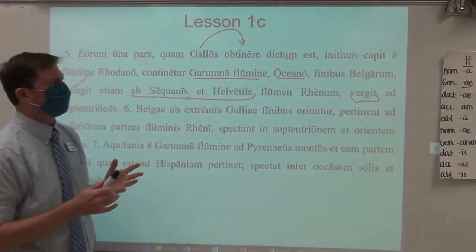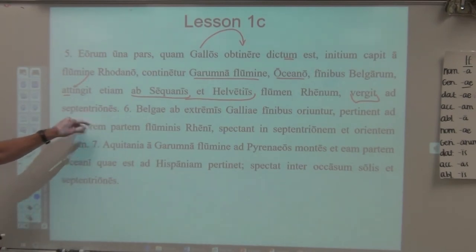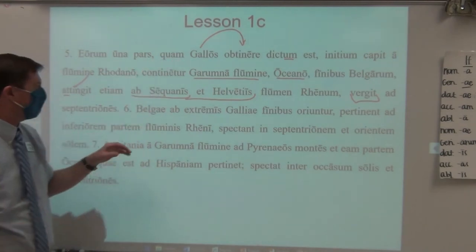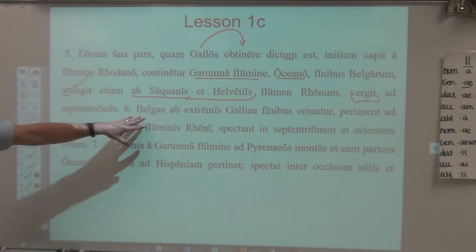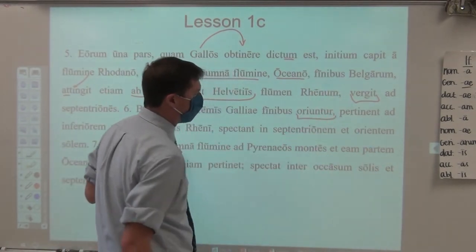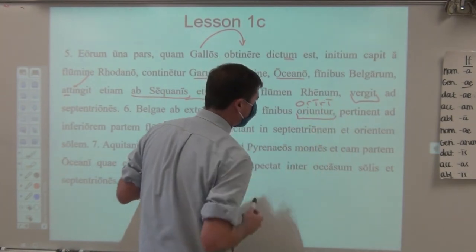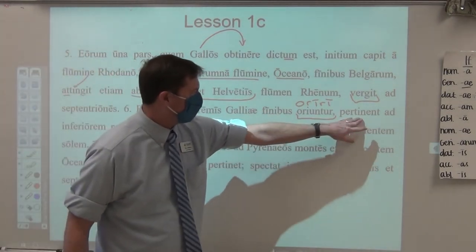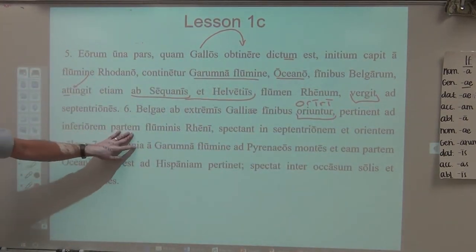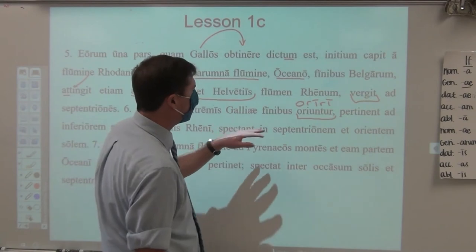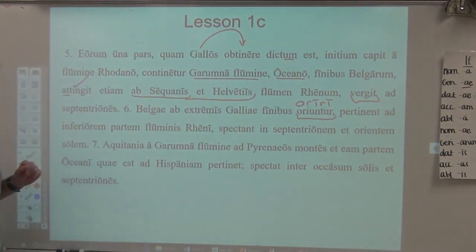It verges, it looks into, it is oriented towards the north. 'Septentriones' is a term that means the north, but literally it's like the seven oxen — described in terms of celestial experience. The Belgians: now we're going to move on from Gaul proper, which is the heart of France. This is now the extreme north, and there's the word 'extremis' — the farthest. The Belgians rise, a deponent verb — 'orior, oriri,' fourth conjugation — from the farthest borders of Gaul, and they stretch, they pertain, towards the lower part of the Rhine River. They watch into the north and into the rising sun — oriented towards the north and east.